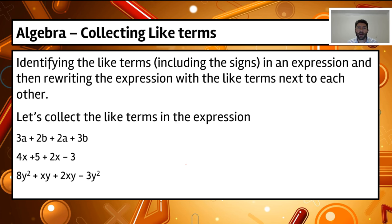We spoke about in a previous video what like terms are — their letters need to be the same. The coefficients don't have to be the same, but we're really looking at the actual variables. What we're now going to do is look at how we identify those like terms in an expression, and then rewrite the expression so that we group the like terms together to make it easier to do the mathematical operations on them.